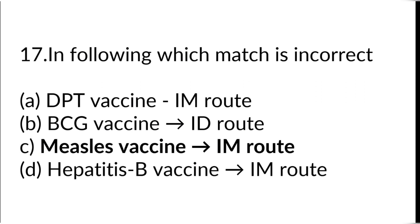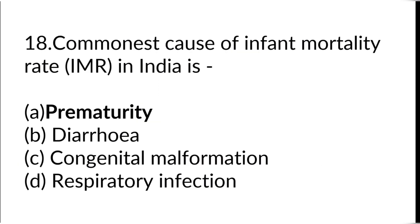In the following, which match is incorrect? Measles vaccine given by IM route — this is incorrect. The commonest cause of infant mortality in India is prematurity.